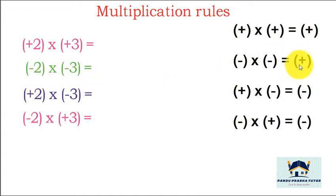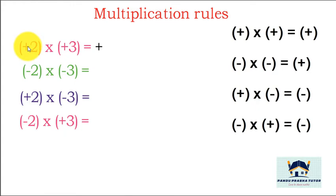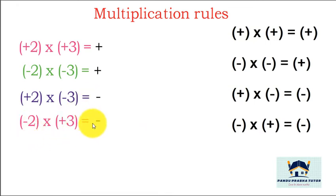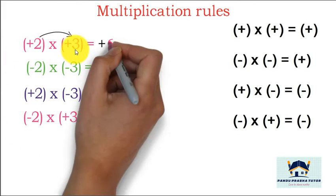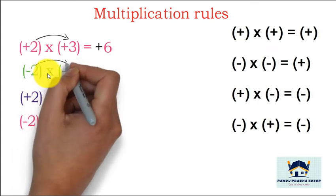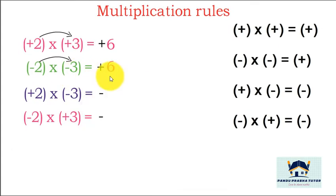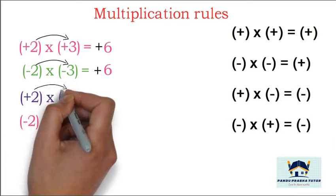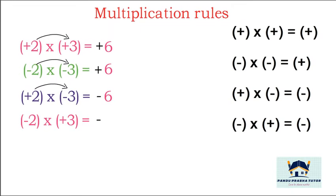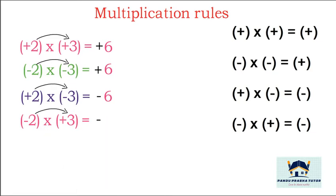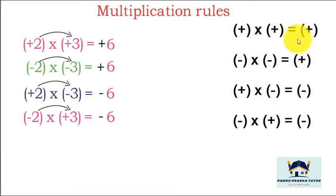Plus into minus is minus, minus into plus is minus. First write the sign, then do the actual multiplication. Plus into plus is plus, minus into plus is minus. 2 into 3 is 6. So: plus 2 into plus 3 is plus 6, minus 2 into minus 3 is plus 6, plus 2 into minus 3 is minus 6, minus 2 into plus 3 is minus 6. Same sign gives plus, different sign gives minus.